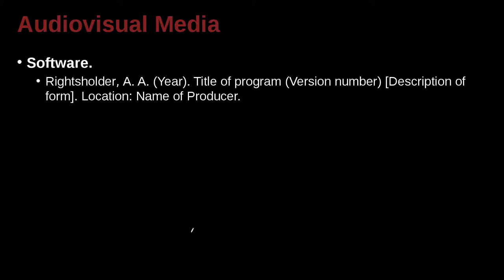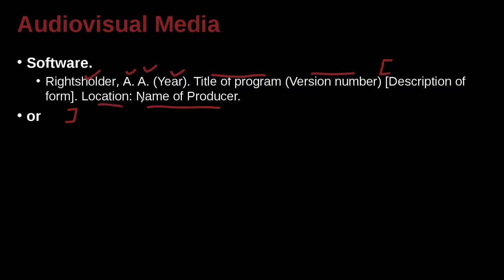What about software? Sometimes you cite software in your methodology — you tell what kind of software you're using. The simple way to do that is to have a last name, first name, middle name, a year, the name of the program, the version number of the program, and then use your special information inside your brackets to tell a little bit more, and then the company and the location of the company that released it.